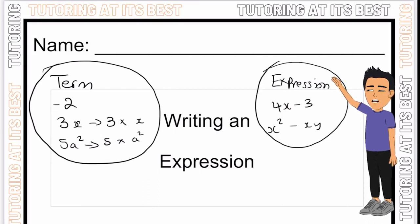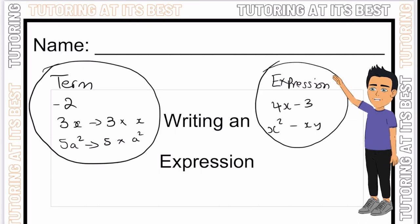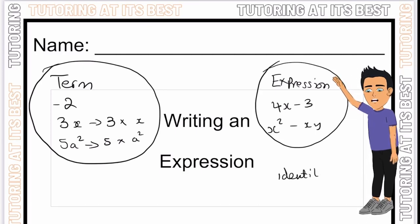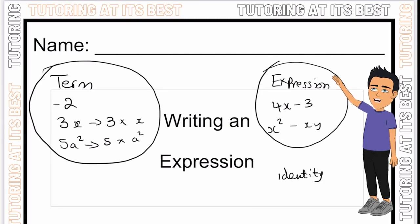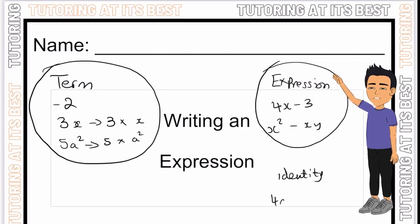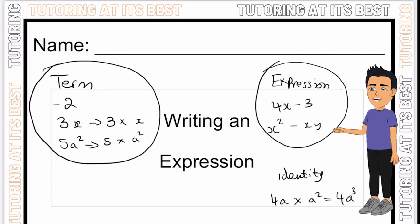And then we have an identity. An identity is a simple statement that is true no matter what. For example, we could say 4a multiplied by a squared is 4a cubed. We have two a's here and a third a here, hence it's a cubed.